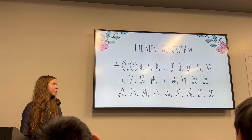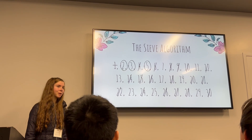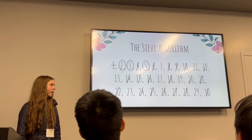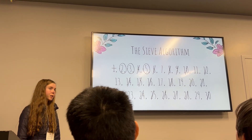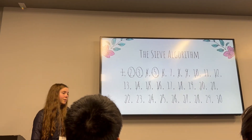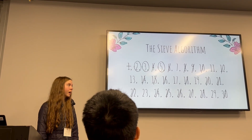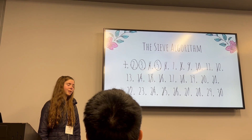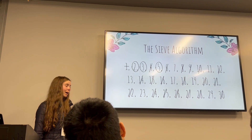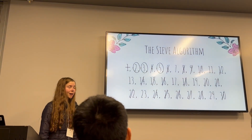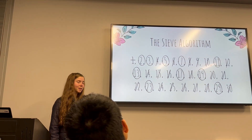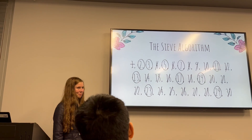We go onward, circling 5 and once again eliminating its multiples. This time, the only fresh removal was 25. And now we're done — every multiple of 7, which is the next prime number, has already been taken out by 2, 3, or 5. So we can simply circle the remaining numbers, and we've found our primes.